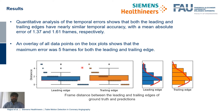Box plots of the absolute difference between the leading and trailing edges of ground truth and prediction show that the maximum absolute difference for both edges was 5 frames. The mean absolute error was 1.37 frames for the leading edge and 1.61 frames for the trailing edge.